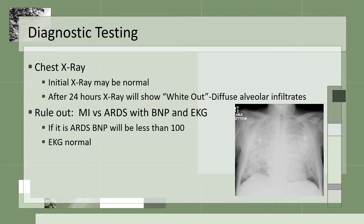Diagnostic testing for ARDS will begin with an x-ray. Your first x-ray may be normal, but after 24 hours the x-rays will show whiteout or diffuse alveolar infiltrates — basically all that fluid. We also need to rule out MI versus ARDS by doing a BNP and an EKG. If it is ARDS, your BNP will be less than 100 and your EKG will be normal.